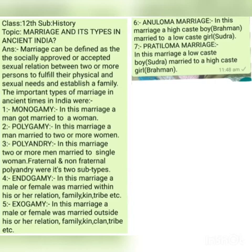Number seven, pratiloma marriage. Pratiloma marriage was a marriage in which a low-caste boy married a high-caste girl — for example, a Sudra boy married a Brahman girl. The Manusmriti has vehemently criticized this type of marriage. As you know, the Manusmriti was one of the ancient law books of India, and a child born out of this type of marriage was known as Chandala. Thank you.